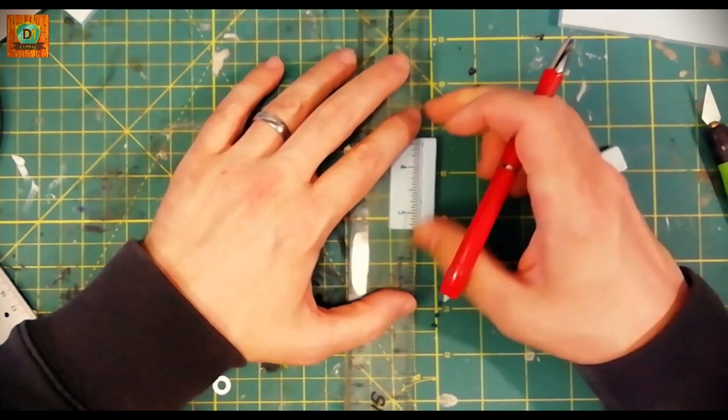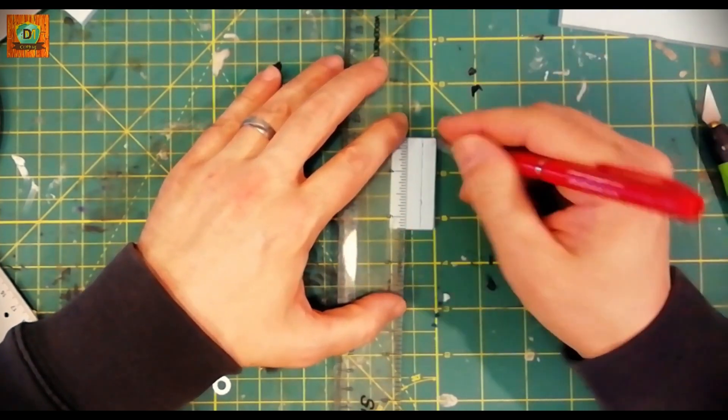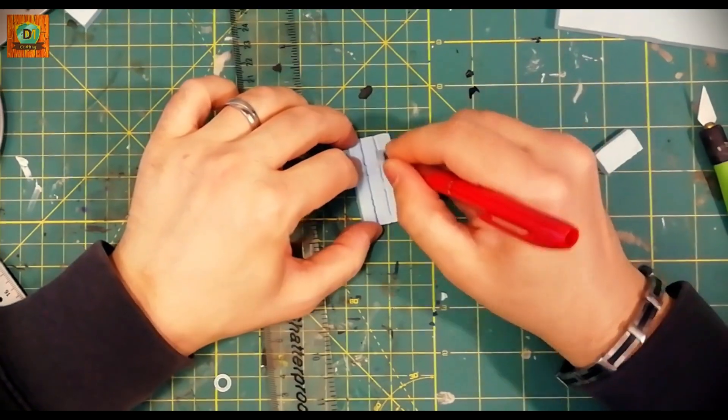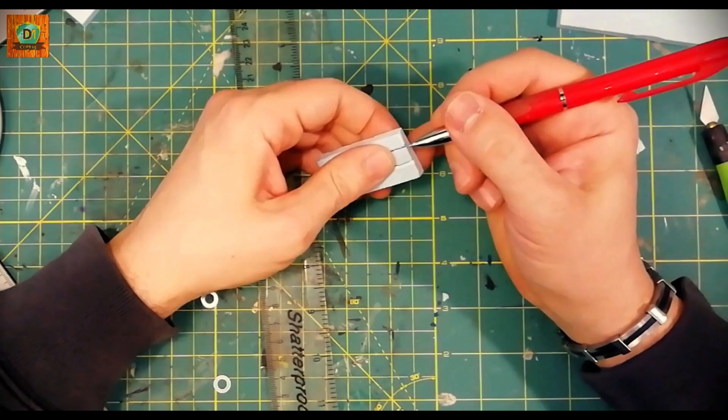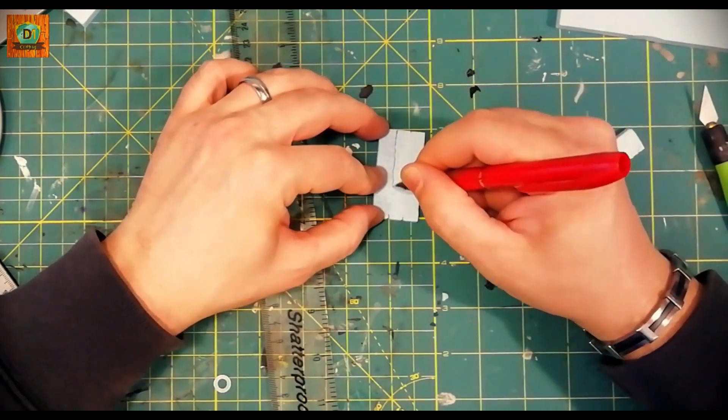Here I'm tracing the lines that represent the three main wooden planks that will form the table. Check also my tutorial number four for the wood grain.